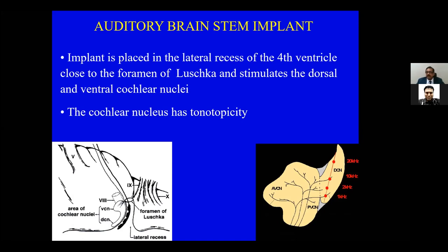At the brainstem level, tonotopicity becomes three-dimensional. It is not only on the surface of the cochlear nucleus that you have the frequency organization — it also goes into the depth of the cochlear nucleus. In other words, from the surface to the depth there is again a frequency range. So to stimulate the cochlear nucleus and get maximum information out of it, you need to stimulate not only the surface but also into the depth. It has to be a three-dimensional piano, which adds to the complexity of our intervention.